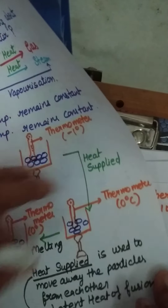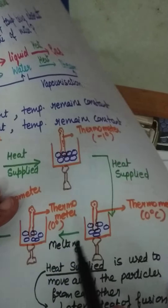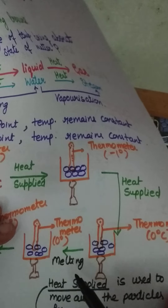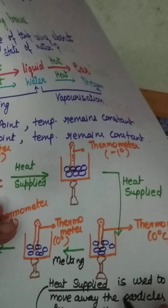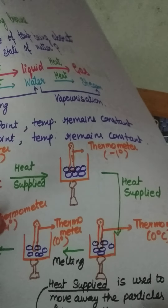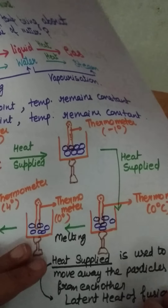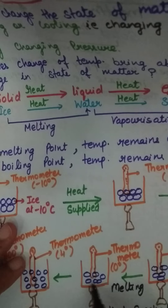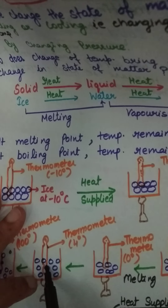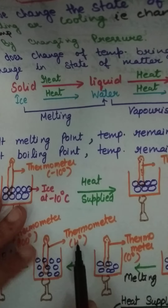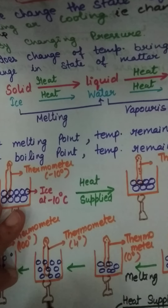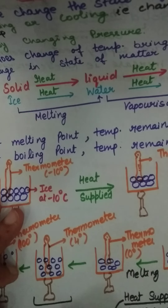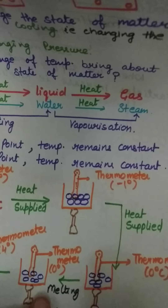We call it hidden heat, because in the thermometer we do not see any change — the temperature stays at zero. That heat is used in overcoming the force of attraction between the particles. Then when all the particles have moved away from each other, the temperature starts to increase again — like to 4 degrees — and the physical state of the substance is now liquid.